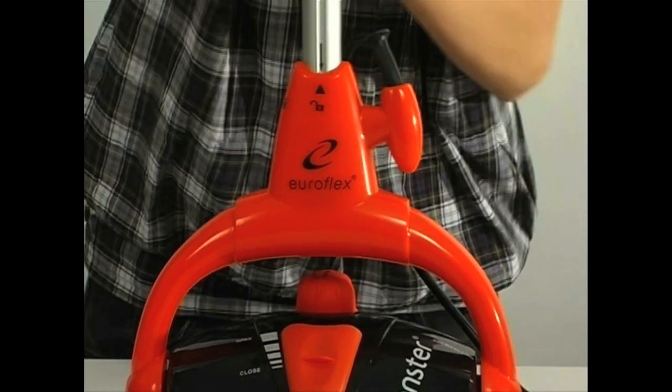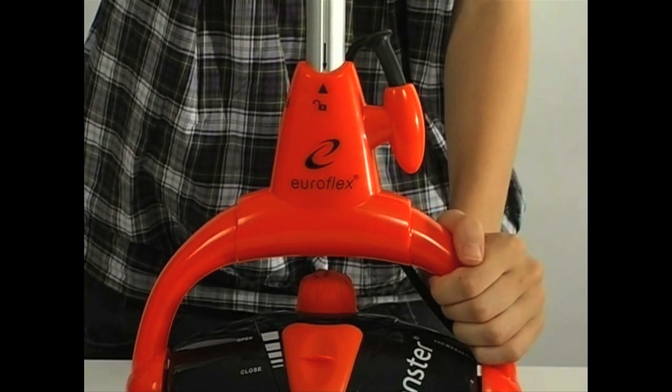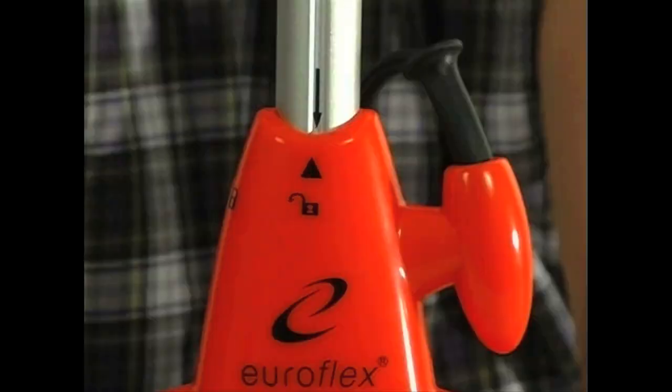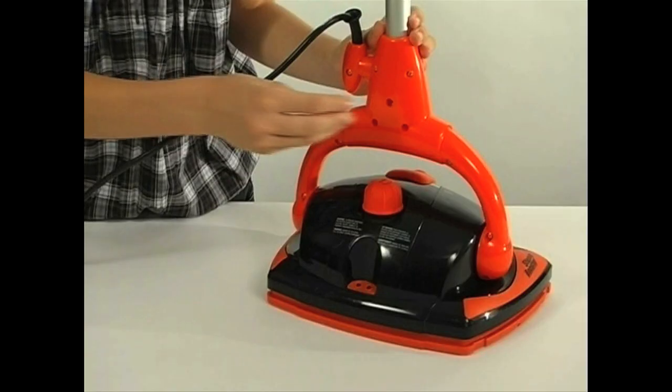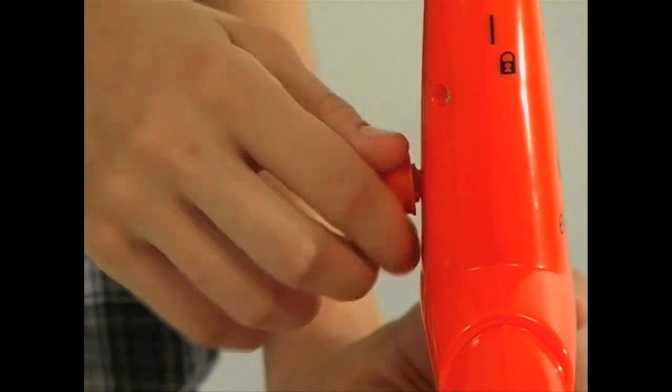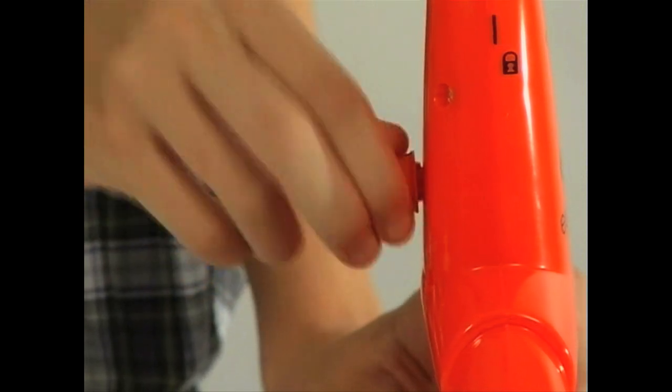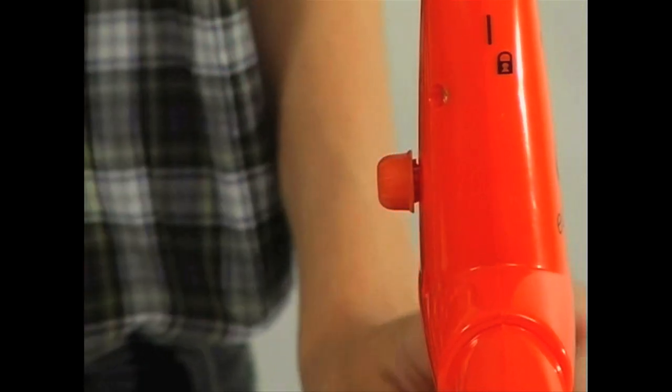Remove the self-tapping screw from the bottom of extension tube. Insert the handle assembly into the floor steamer base. Align arrow on handle with arrow on base. Once inserted, twist handle assembly 90 degrees clockwise. Secure the handle assembly with self-tapping screw which was removed from bottom of extension tube.